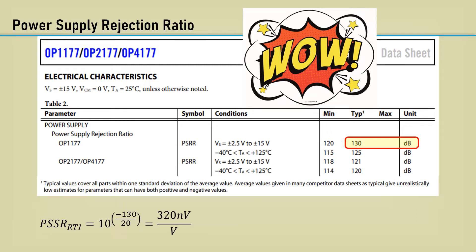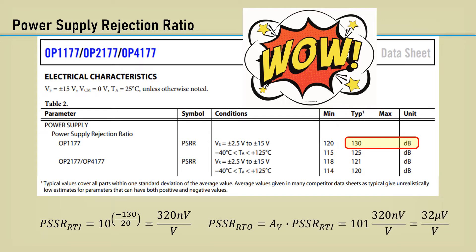Therefore, to get the change in the output voltage, you must multiply it by the noise gain. If the noise gain was 101, the output could change 32 microvolts per volt. That's still really good, but there's another problem.